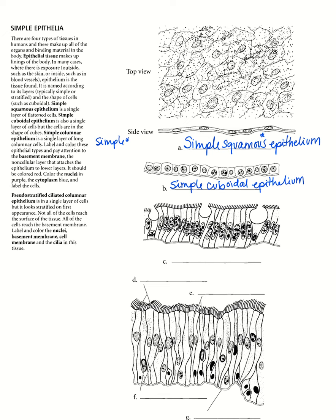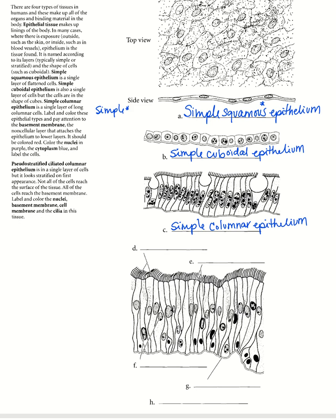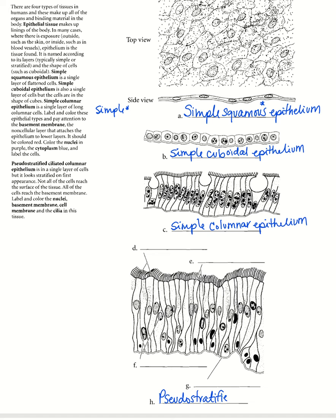Going one further, instead of just cube-shaped we have column-shaped cells, which are going to be simple columnar epithelium. So those are the three types of simple epithelium — well, there's actually one more. This one is a little more complex; we refer to it as pseudo-stratified ciliated columnar epithelium because it has cilia at the top and the cells are column-shaped.